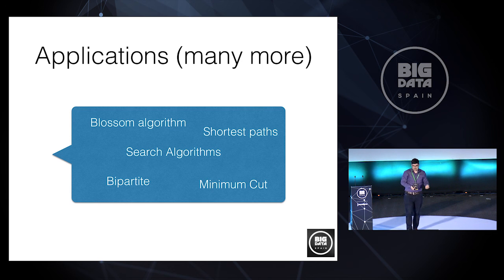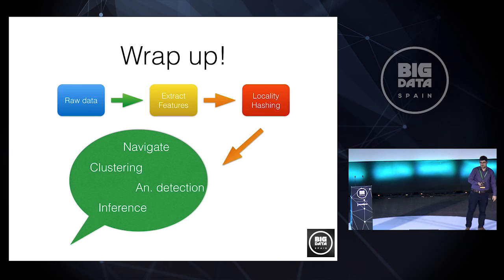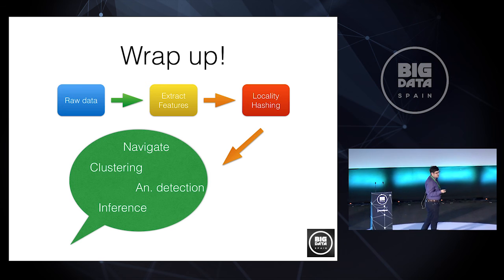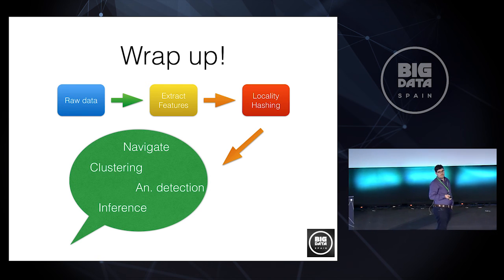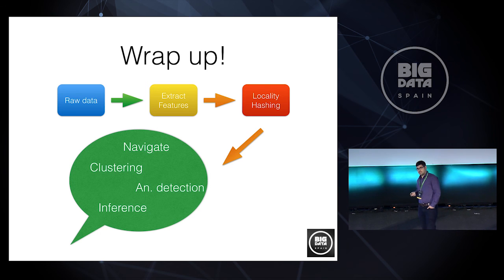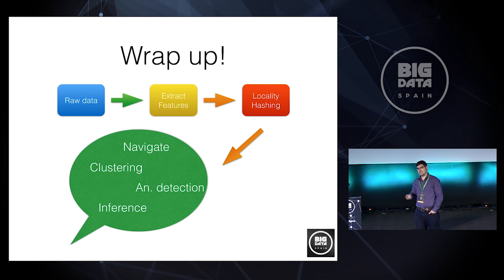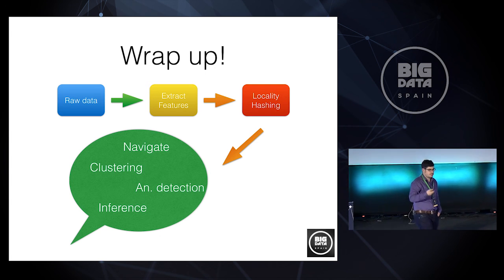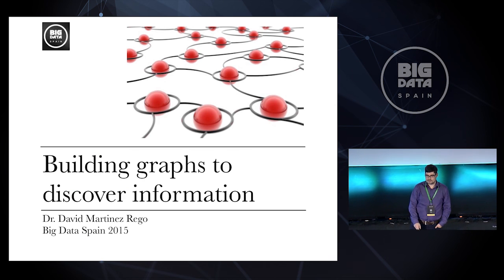And there are many other algorithms I'm overlooking. So there is blossom algorithm to find the best pairs in a graph. Shortest paths. Minimum cut search algorithms. Bipartite graphs are also very useful. So, once you have put together all these pieces, a lot of opportunities emerge. So, just to wrap up, keep this recipe in your mind. So, if you face some raw data, you could extract features that are semantically meaningful for you. Construct a graph using this locality hashing. And once you have the graph built, you can navigate. For example, there is a standoff Neo4j there. You can put things in there and navigate them. Do clustering and anomaly detection if there is many possibilities emerge. Thank you very much. Thank you.